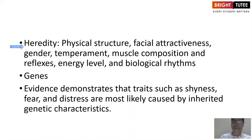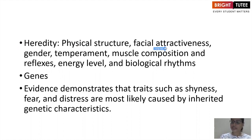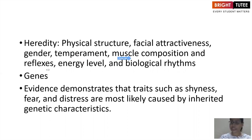The first factor we need to understand is genes — heredity — things we have inherited from our parents and ancestors. Physical structure, height, attractiveness, and gender are all inherited. Temperament, whether easy or difficult, also comes from genes, as do muscle composition, reflexes, activity level, energy level, and biological rhythms.